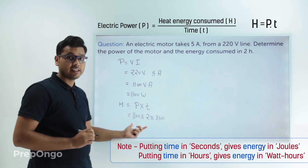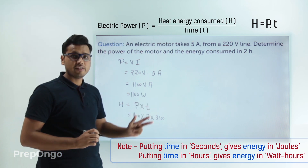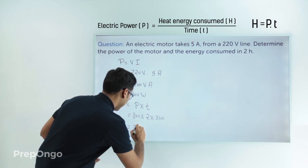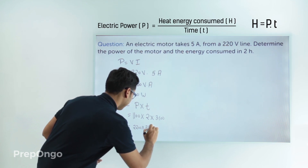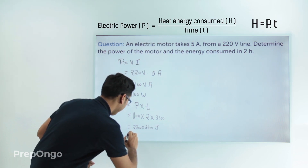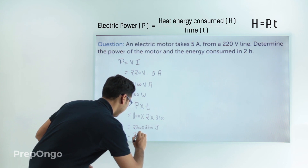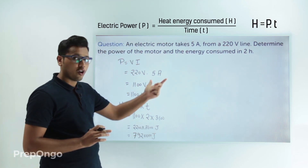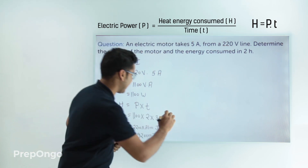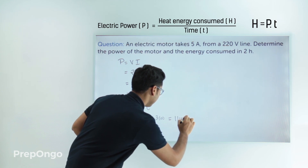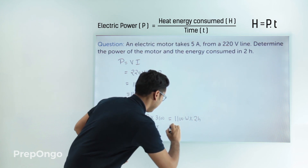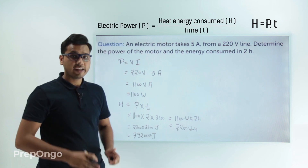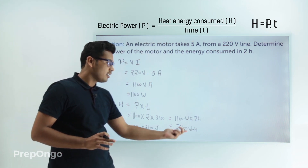Converting time: 2 hours equals 2×3600 seconds. This gives us energy in Joules: 1100 × 2 × 3600 = 7,920,000 Joules. If we put time in hours instead, we get the energy in watt-hours: 1100 watts × 2 hours = 2200 watt-hours. So we can express the energy in both forms — in Joules as well as in watt-hours.